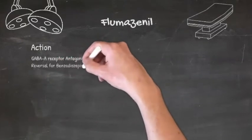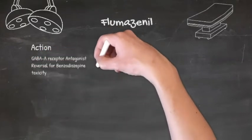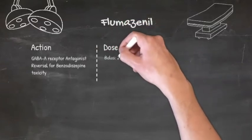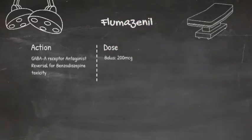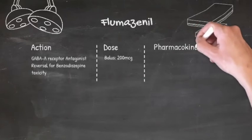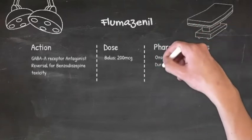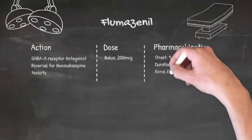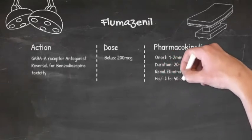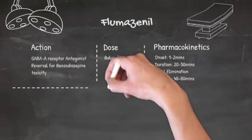The usual bolus dose of flumazenil is 200 micrograms. It has an onset within 1-2 minutes and a short duration of action of only 20-50 minutes, so you may need to give repeated boluses if the benzodiazepine to be reversed has a longer duration of action.